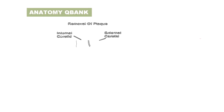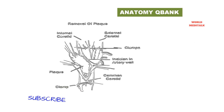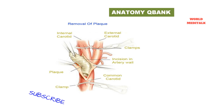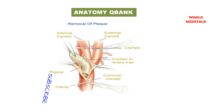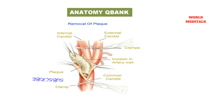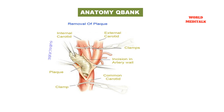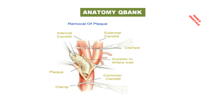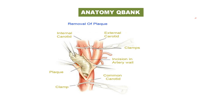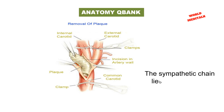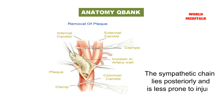During a carotid endarterectomy, the sternocleidomastoid muscle is dissected with ligation of the common facial vein, and then the internal jugular is dissected, exposing the common and internal carotid arteries. The sympathetic chain lies posteriorly and is less prone to injury during this procedure.